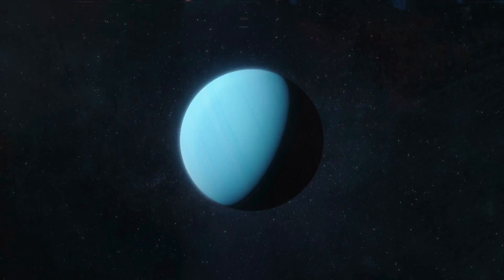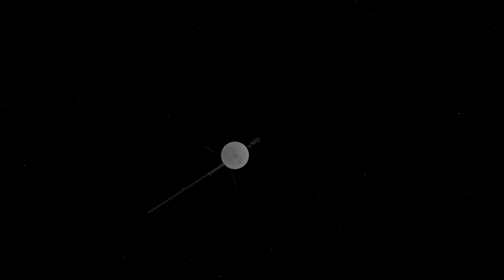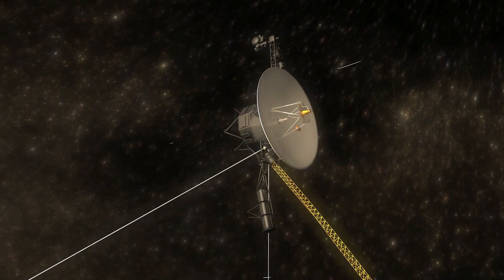Voyager 2 then continued on to Uranus and Neptune, becoming the first spacecraft to visit these distant ice giants. Throughout their journey, the Voyager spacecrafts faced several challenges.